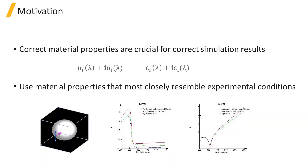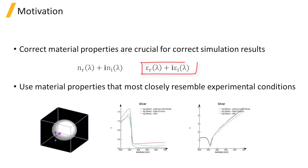For optical simulations, defining the correct material properties is crucial for getting the correct simulation results. This means that we need to define the real and imaginary part of the refractive index, or permittivity, as a function of wavelength or frequency.